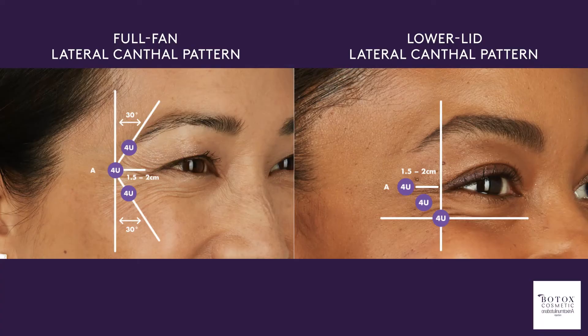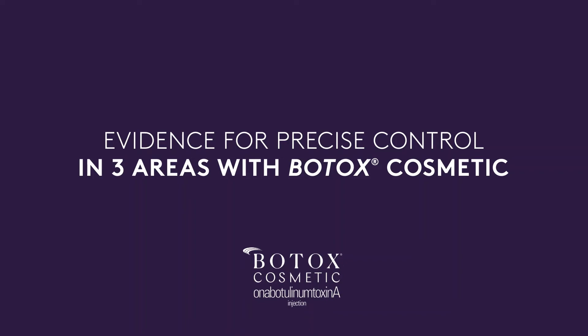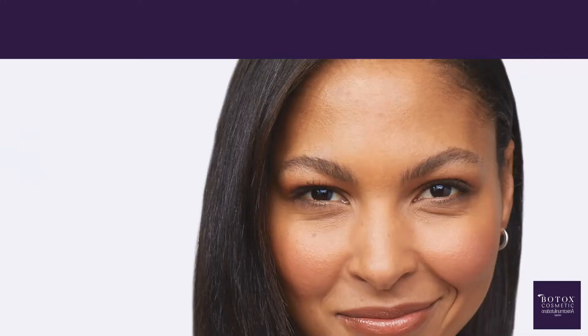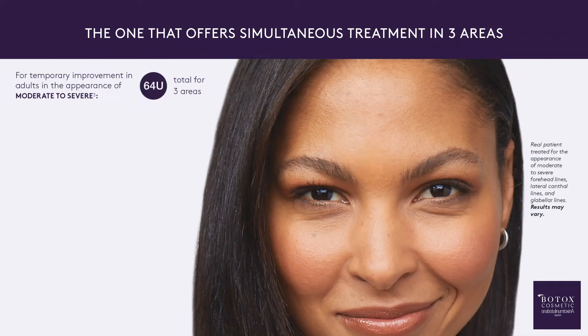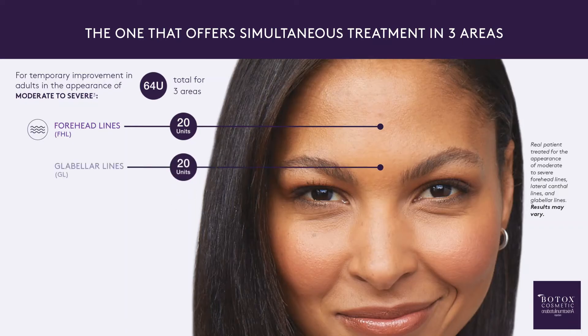These details and more are also available when you speak with your Allergan Aesthetics representative. Botox Cosmetic is the only treatment FDA approved to temporarily improve the look of moderate to severe forehead lines, lateral canthal lines, and glabellar lines in adults. The total approved dosing is 64 units: 20 units for moderate to severe forehead lines, 20 units for moderate to severe glabellar lines, and 24 units for moderate to severe lateral canthal lines, based on rigorously studied dosing and injection patterns.